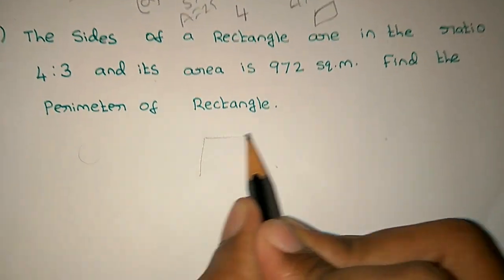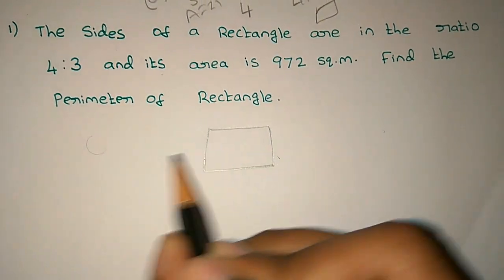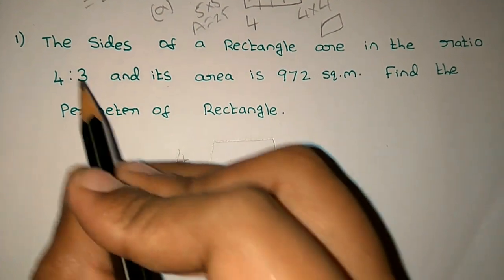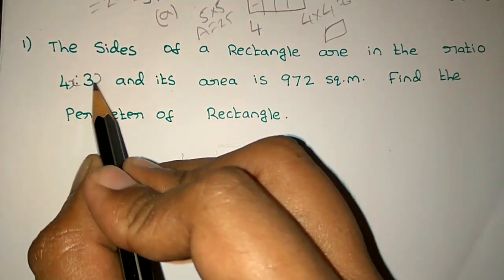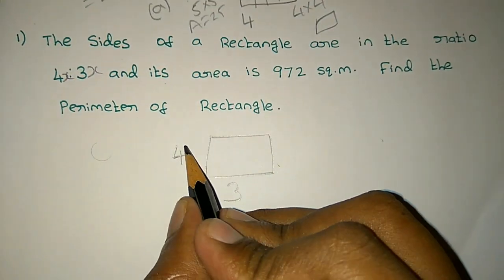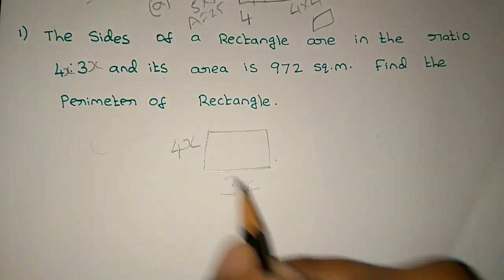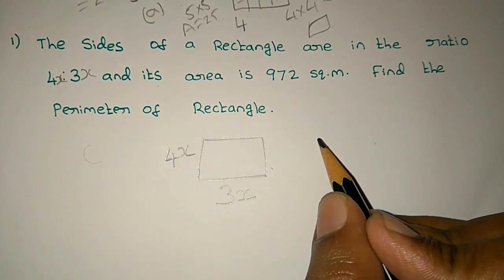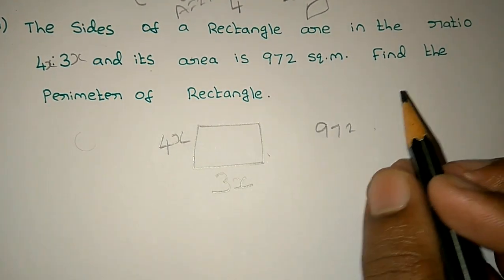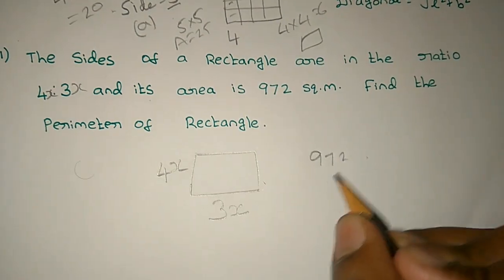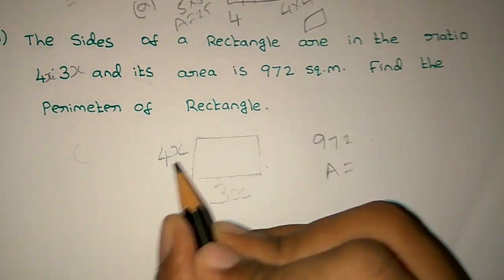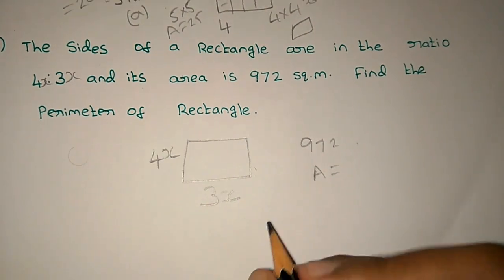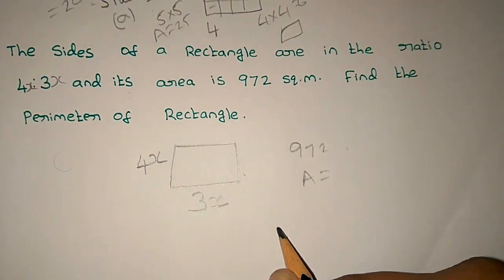Now for a rectangle example: the sides are in the ratio 4:3. The area is 972. We need to find the perimeter of the rectangle. We can use the area and the side ratio to find the dimensions.